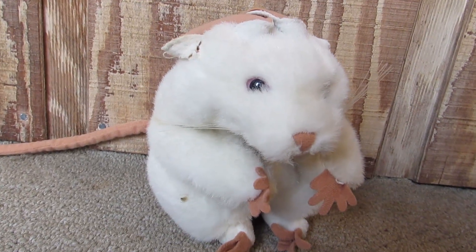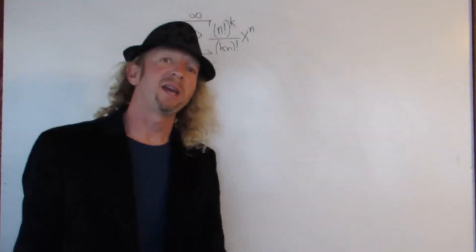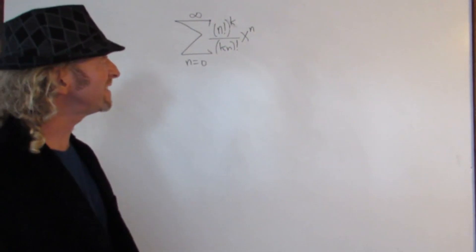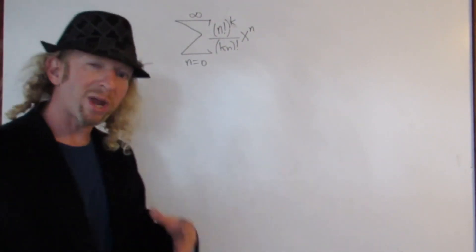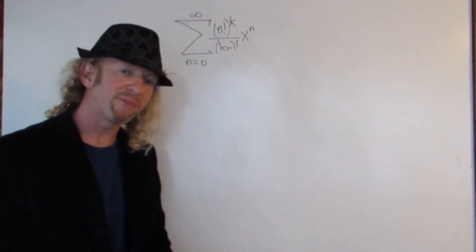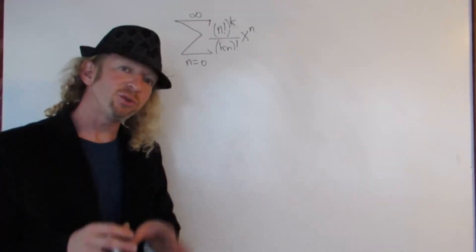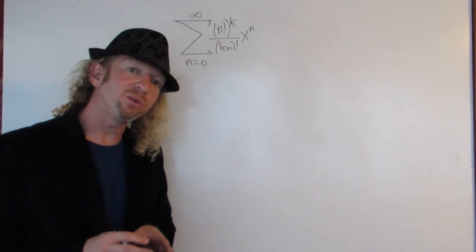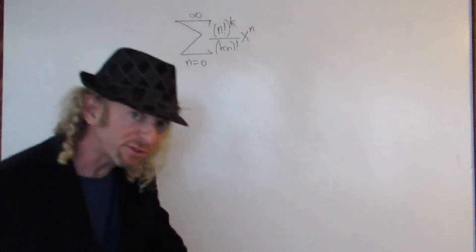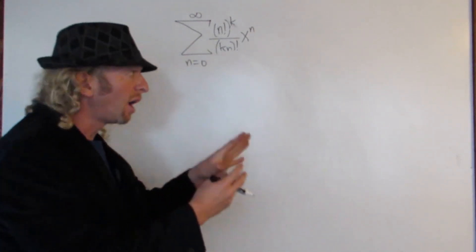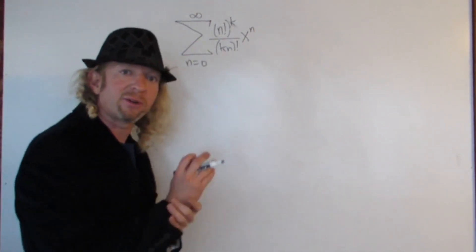In this problem we have an infinite series and we're going to find the radius of convergence. I love infinite series. To do that we're going to use the ratio test to help us find the interval of convergence. Once we have the interval we can draw a little picture and figure out the radius.